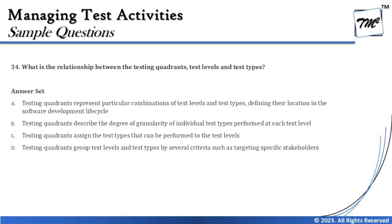Let's move on to question number 34. This is about the test coordinates of the pyramids. What is the relationship between the quadrant, the test level, and the test type? We have been through all four quadrant details — we discussed the levels and types, which is fully automated, which can be partially manual or automated, which can be fully manual, and what is technology-facing versus business-facing.